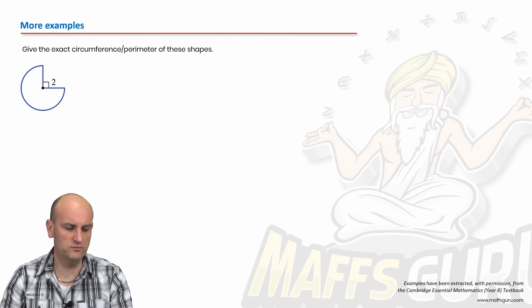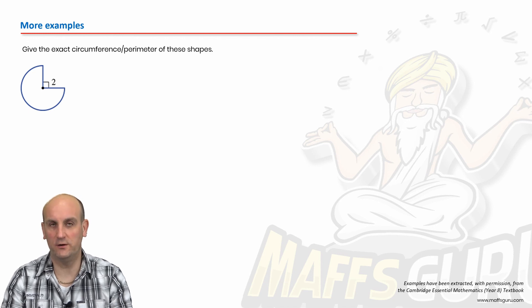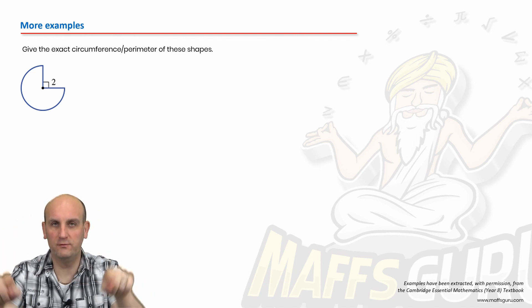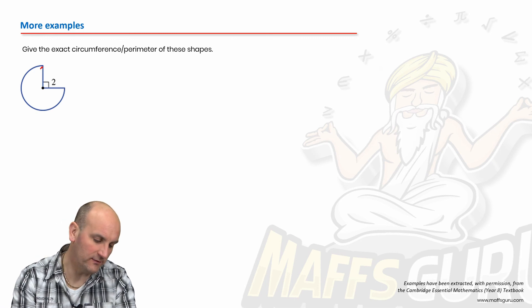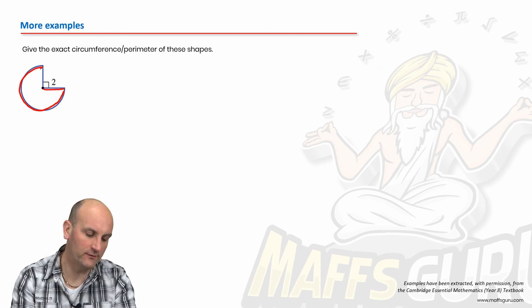What about this one? The exact circumference perimeter of these shapes. Now, see the difference? How much of the shape have we got? Well, we've got 3 quarters of a circle. See that? There is 3 quarters of my circle, which I then need to add on that. And add on that, those 2 and 2.